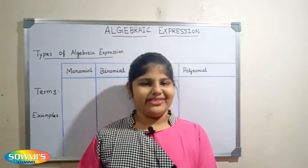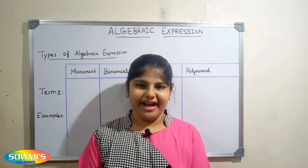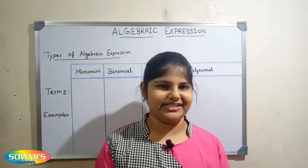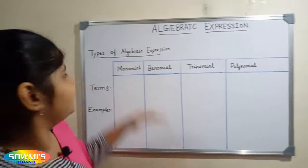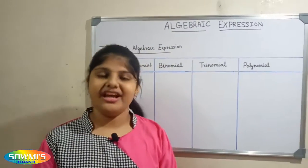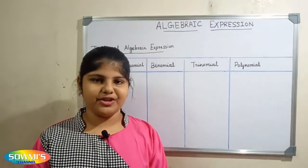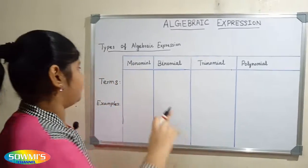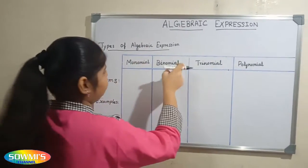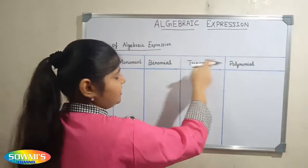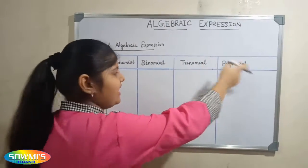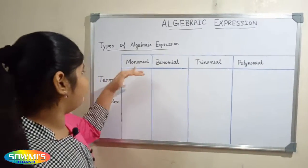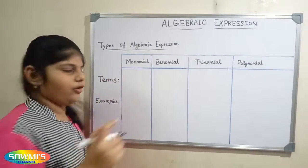Hi friends, this is Samish channel. In this video we are going to discuss about types of algebraic expressions. There are four types of algebraic expression: they are monomial, binomial, trinomial, and polynomial.